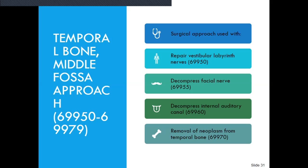Now we're going to talk about the temporal bone, page 583, right under introduction. The middle fossa approach is used to excise acoustic neuromas, decompress facial nerves, and repair nerves in the vestibular labyrinth. Our temporal bone middle fossa approach covers codes 69950 through 69979. The surgical approach is used with repair of vestibular labyrinth nerves — 69950; decompress facial nerves — 69955; decompress internal auditory canal — 69960; and removal of neoplasm from temporal bone — 69970.